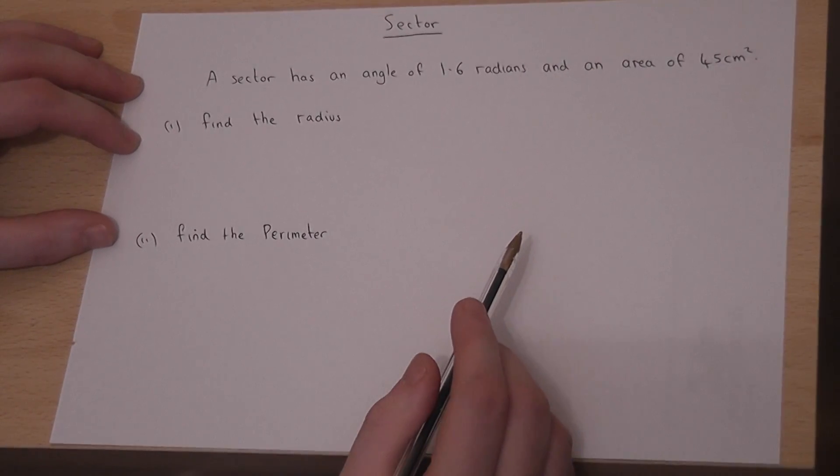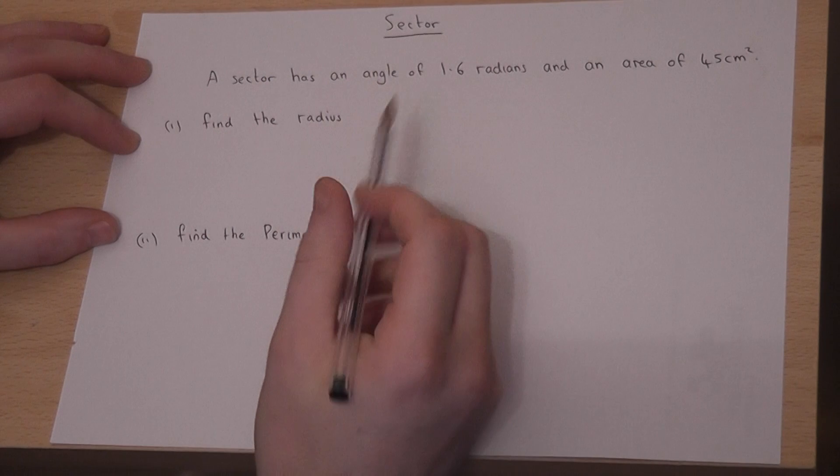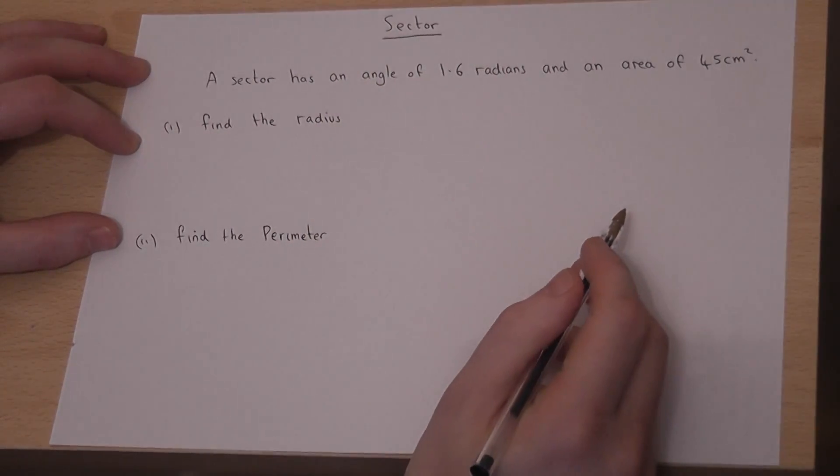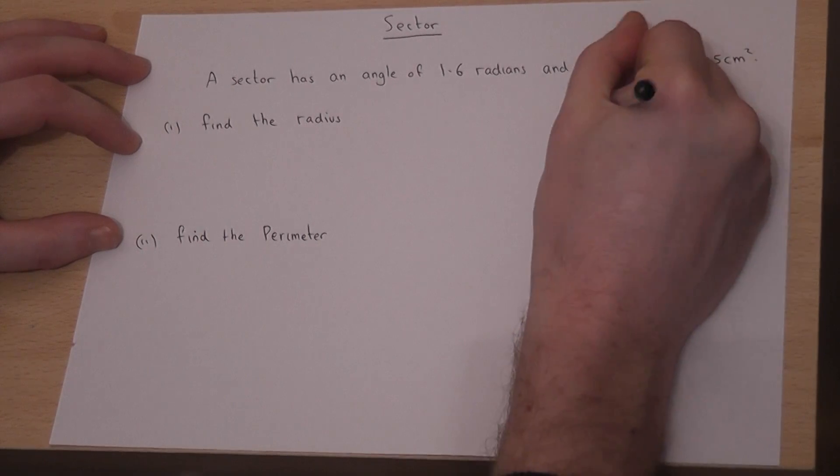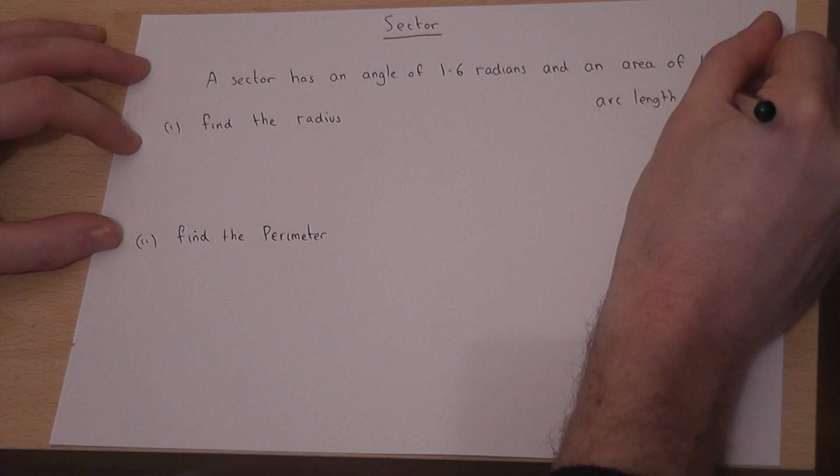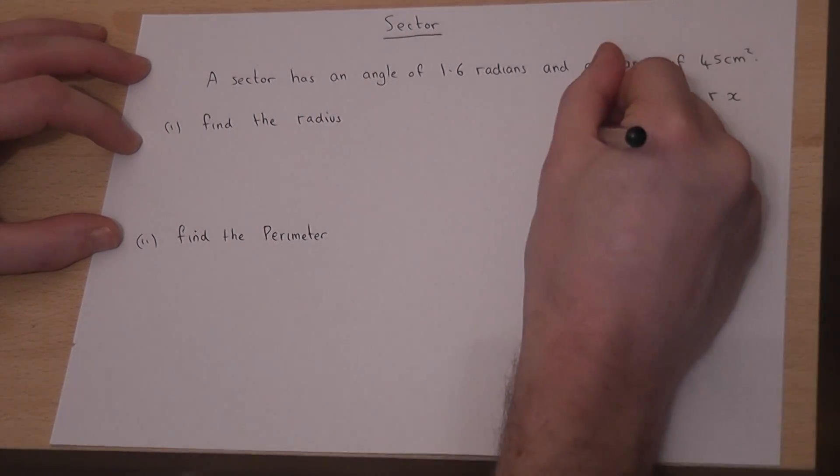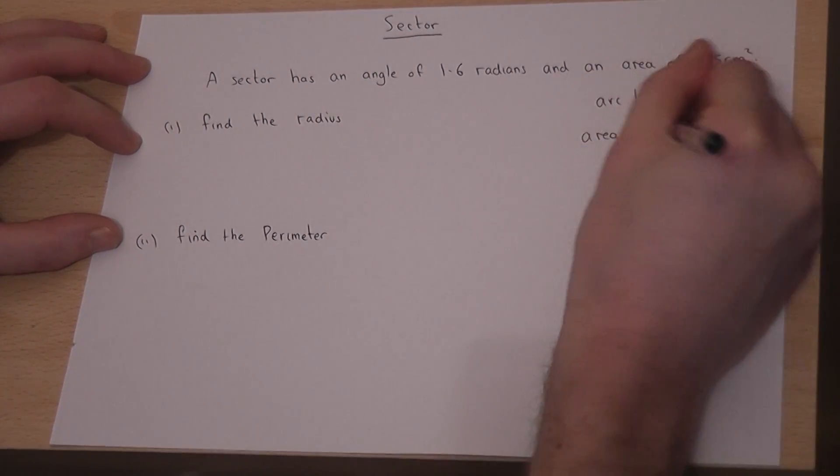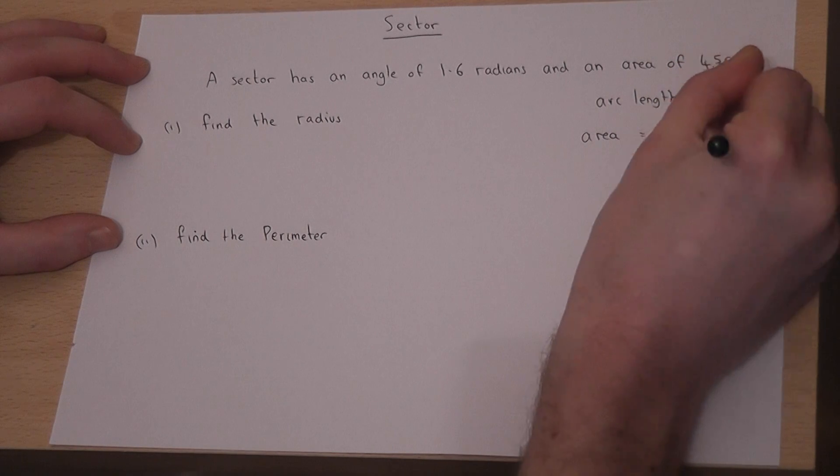This video looks at the key formulae for sectors. If you have a sector with angle x and radius r, the arc length is r times x, and the area is half r squared times x.